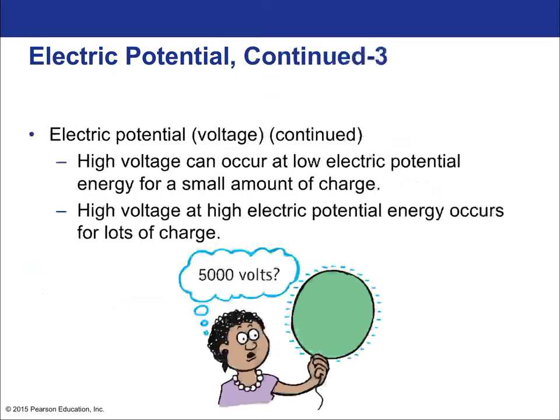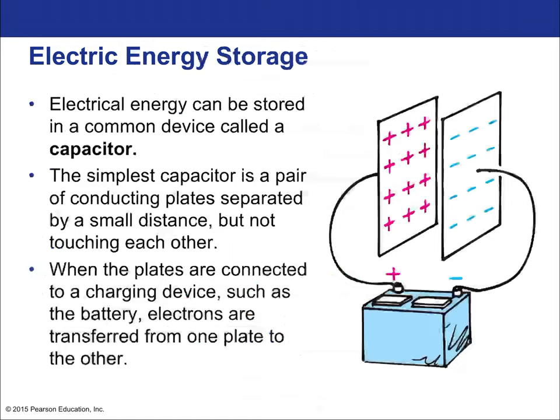A 5000-volt balloon has high voltage—way more than the 120 volts in our wall—but it's not deadly because it carries very low charge. There are actually very few charge carriers, so the energy is low even though the voltage is high.